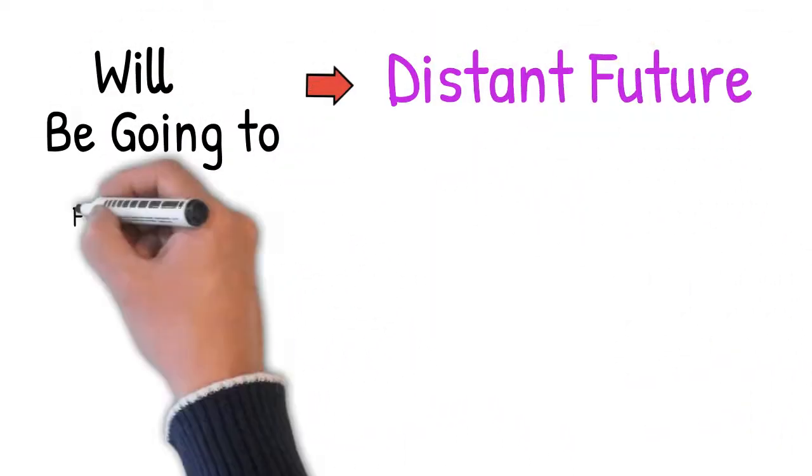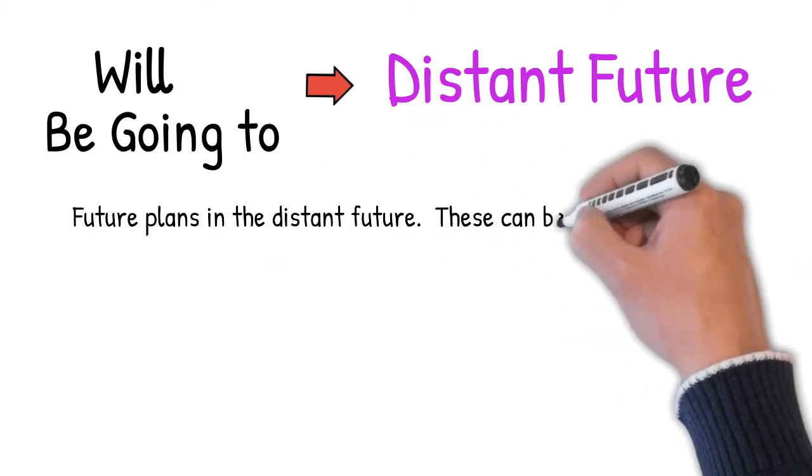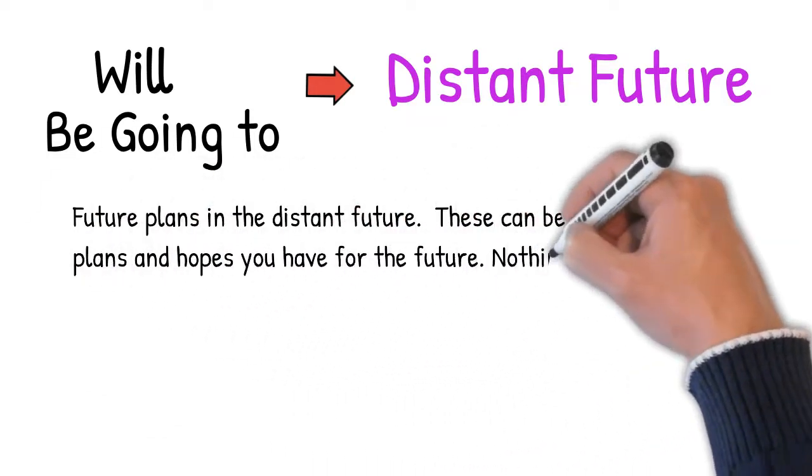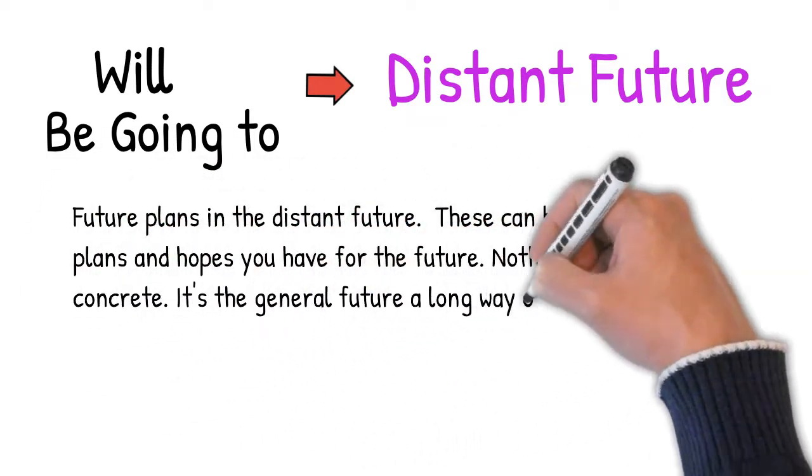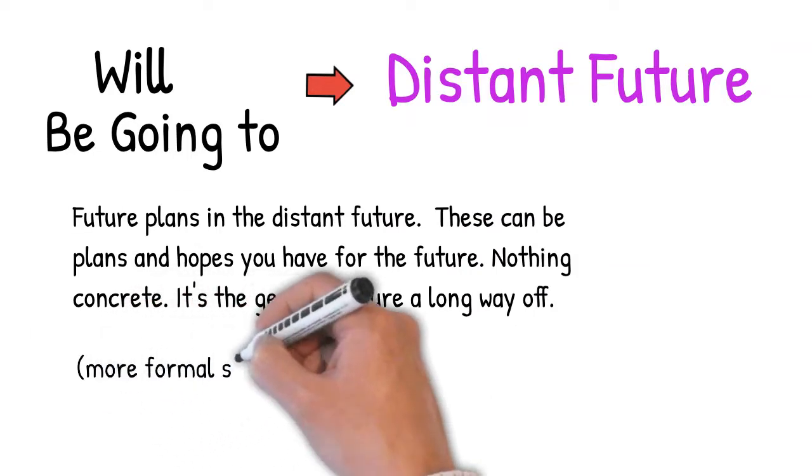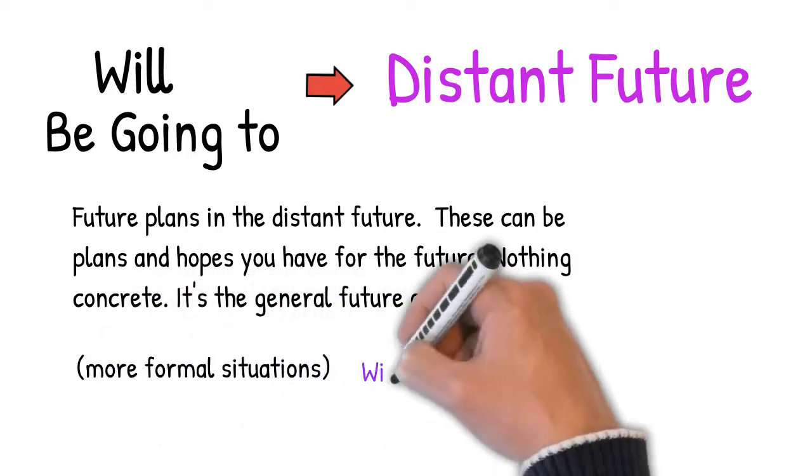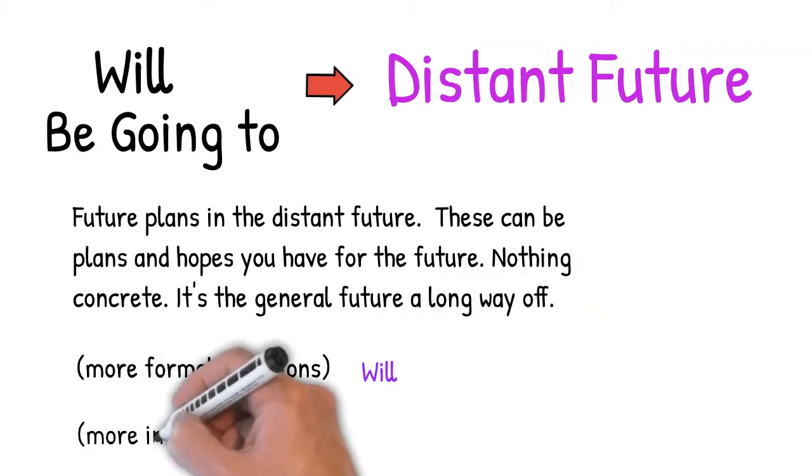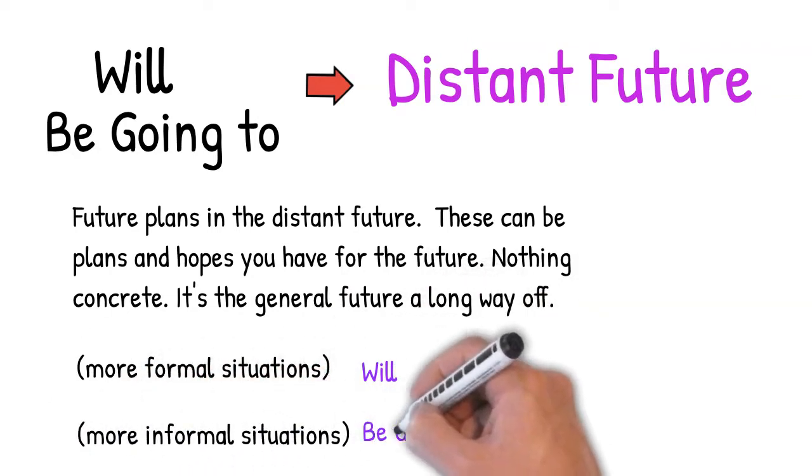Will and be going to are used in the distant future. What is the distant future? These are future plans in the distant future, a long way away. These can be plans and hopes that you have for the future, nothing concrete. It's the general future a long way off.